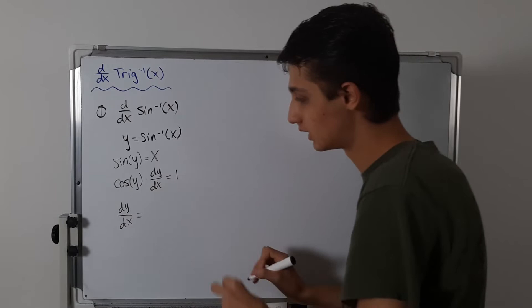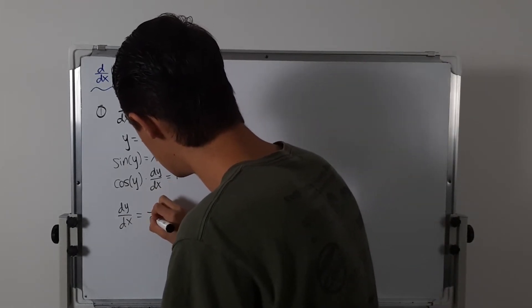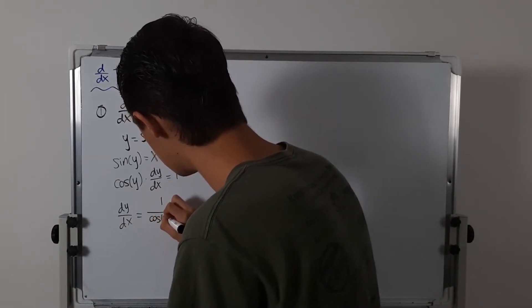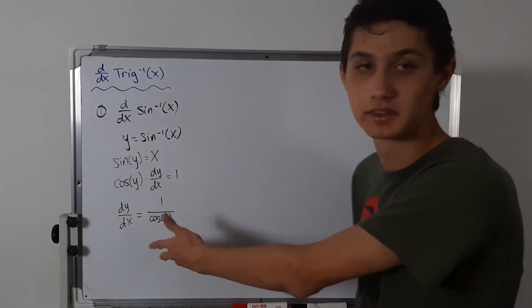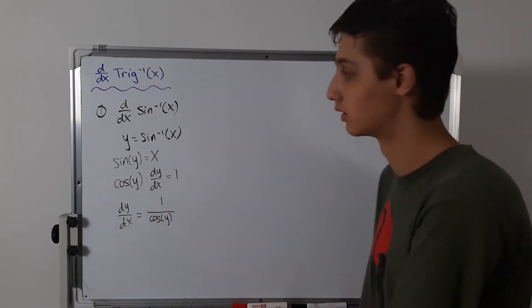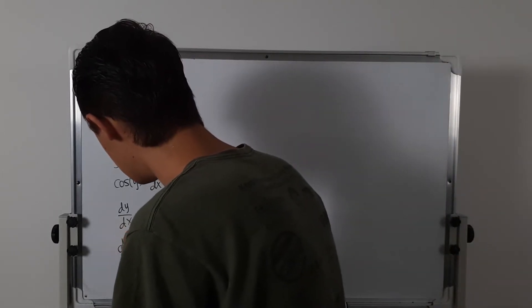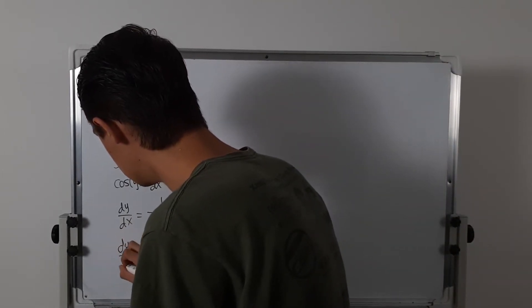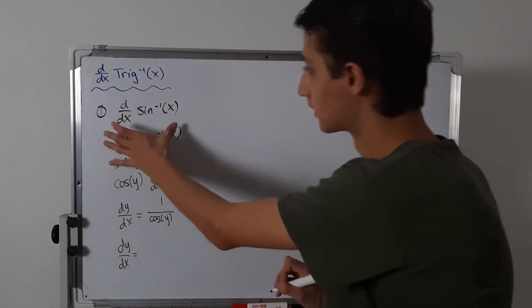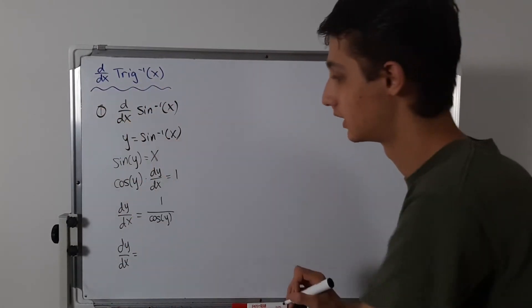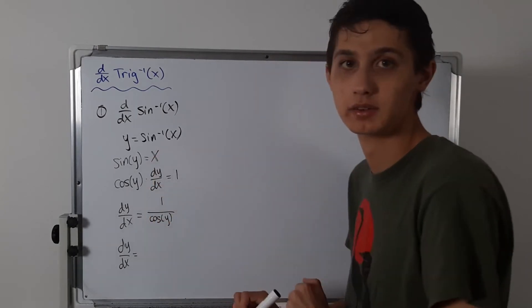We can't just leave y there — y is sine inverse of x. So the derivative, dy/dx, is going to be 1 over cosine of the sine inverse of x.